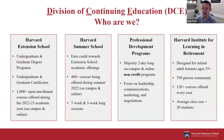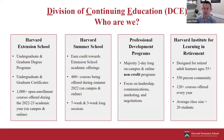There are four parts of DCE. Harvard Extension School, which we're focused on today, is one of them. Also under the DCE umbrella is Harvard Summer School, Professional Development Programs, and Harvard's Institute for Learning and Retirement. Harvard Extension School offers undergraduate and graduate degree and certificate programs. For the upcoming 2022-23 academic year, we'll be offering over 1,000 open enrollment courses, both on campus and online. The current summer term is actually the first time we've offered on-campus courses since the start of the pandemic.